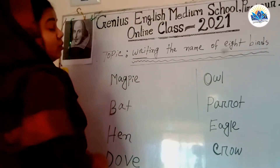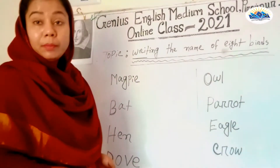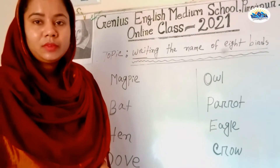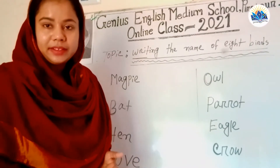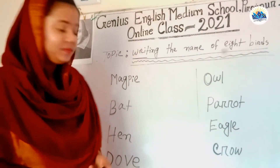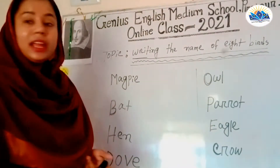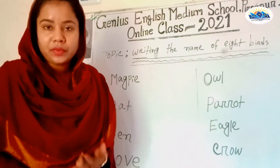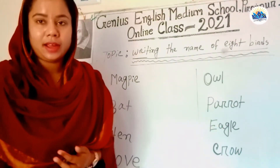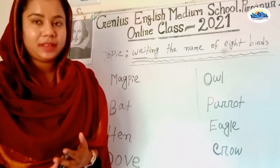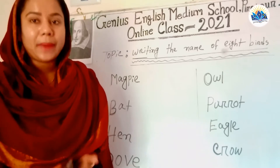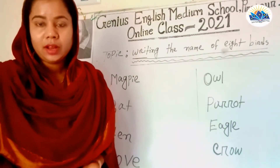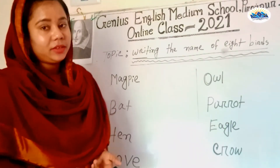Number one: magpie. Number two: bat. Number three: hen. Number four: dove. Number five: owl. Number six: parrot. Number seven: eagle. Number eight: crow.